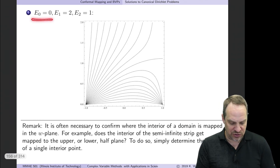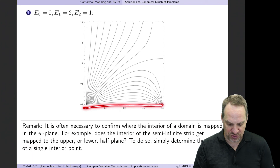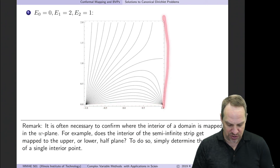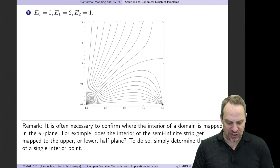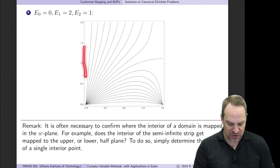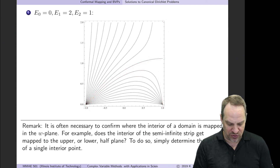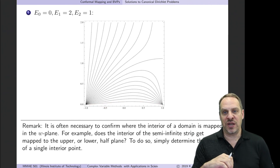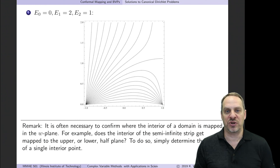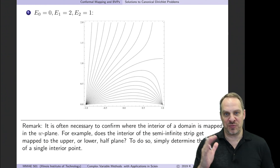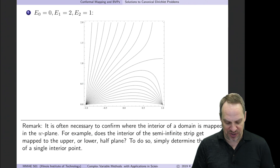One more: E0 = 0, E1 = 2, E2 = 1. Again, contours pile up in the corners where there are dramatic changes in equipotential at the boundary. Contours go from 0.1, 0.2, 0.3 up to 1, and then 1.1, 1.2 and so forth up to 2 along the bottom boundary. All three of these solutions are contained within the general solution using the Poisson formula for the upper half plane, which was then mapped back to the semi-infinite strip.